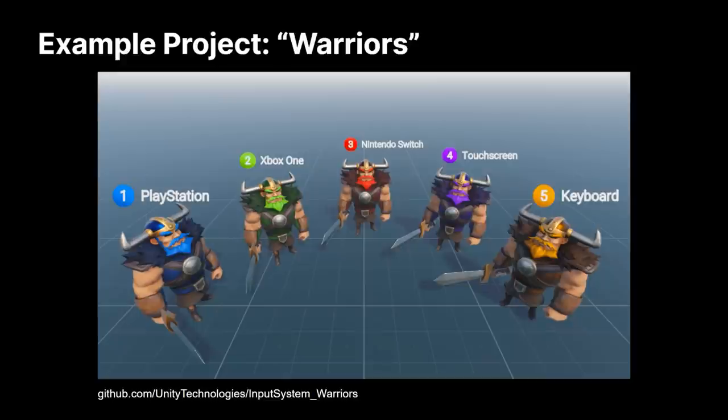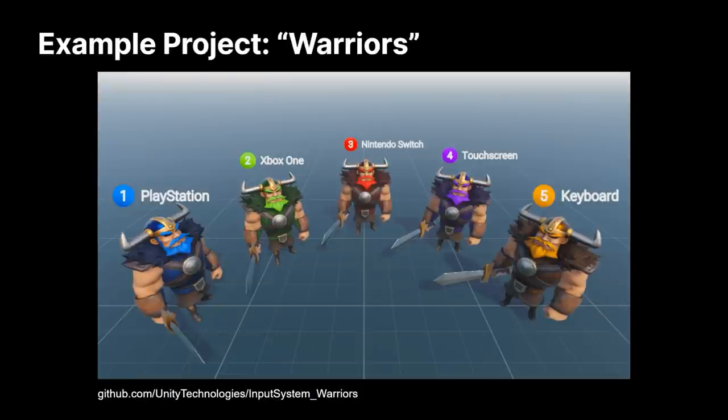I've created an example project called Warriors, available publicly on GitHub. Warriors covers a wide variety of different uses of Unity's Input System, ranging from cross-platform inputs such as gamepads on console, keyboard and mouse, and touchscreen, all the way through to rebinding UI. I'm going to be using this Warriors project to demonstrate several workflow features, from feature integrations such as UGUI and Cinemachine, to how to do things like rebind UI and detect when a gamepad is unplugged and re-plugged again.